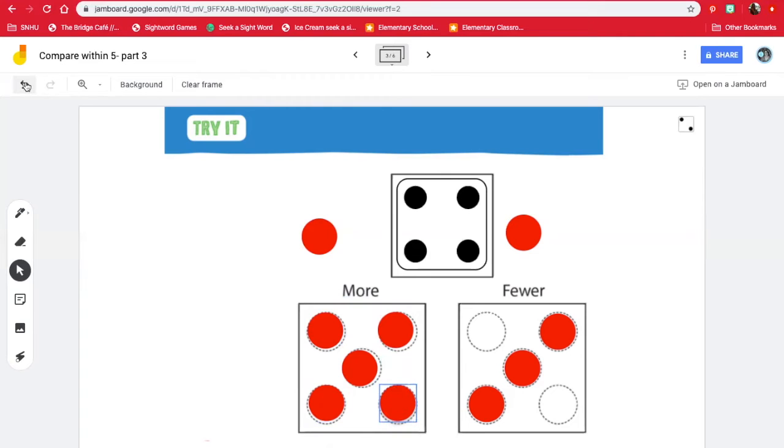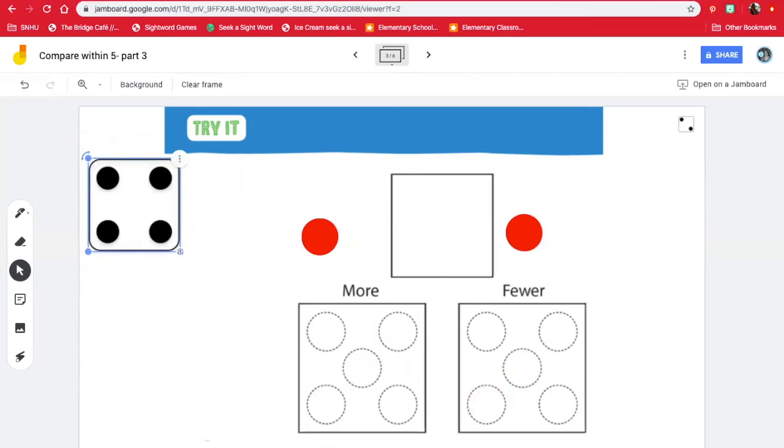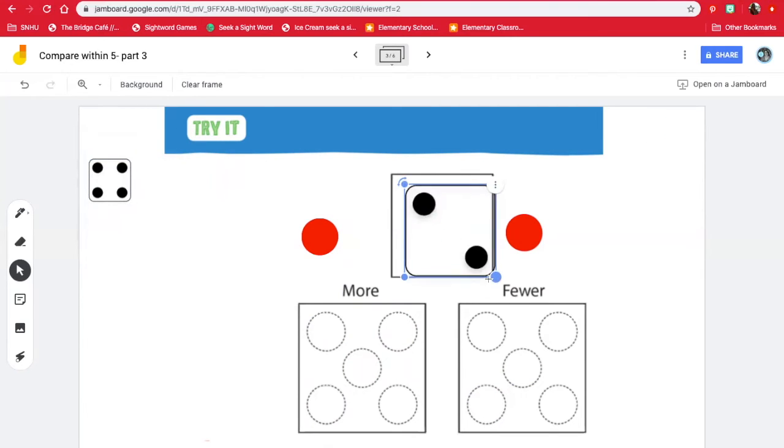Let's try another one. Let's return all the circles. I'm gonna put the four over here. And we have a new dice. How many is on this one? One, two, two.